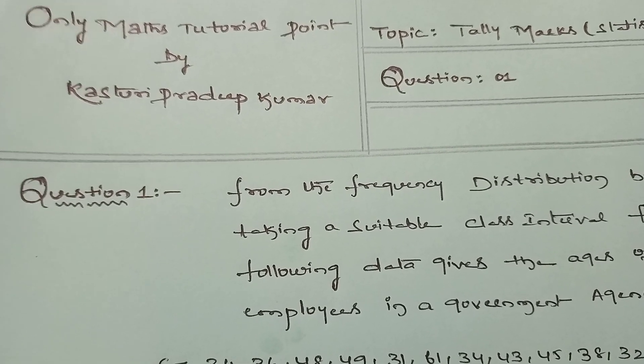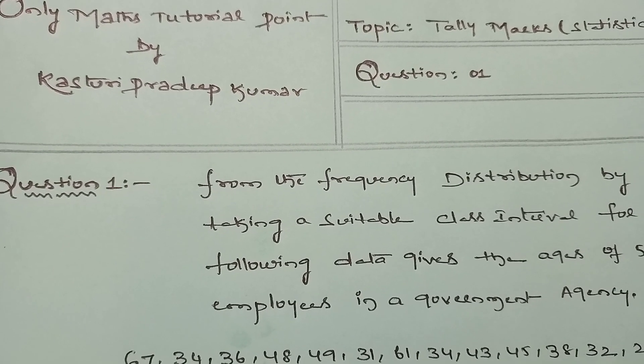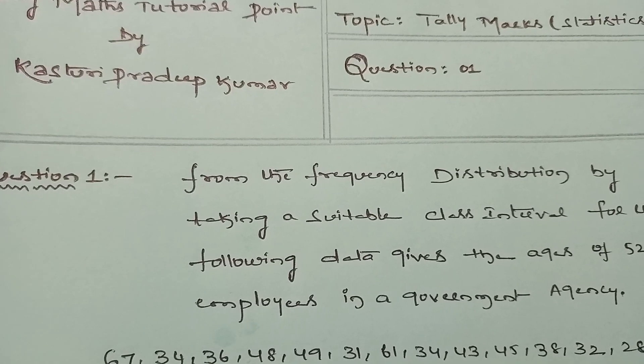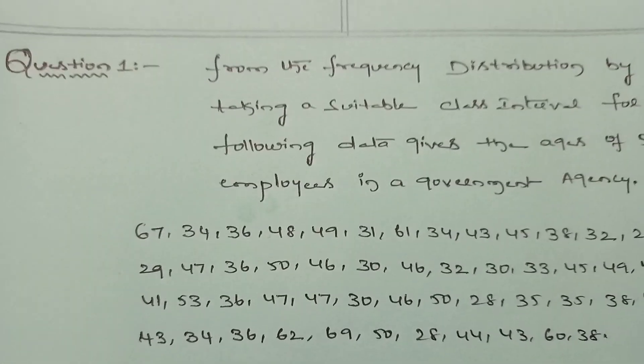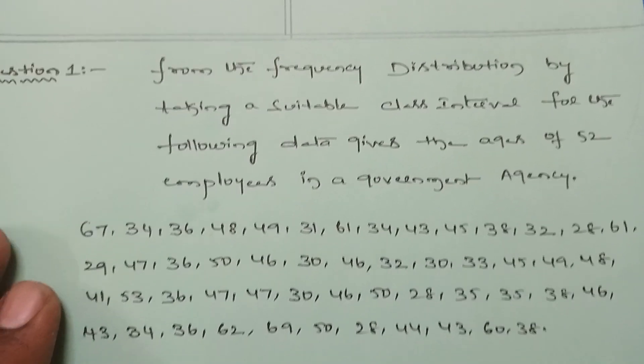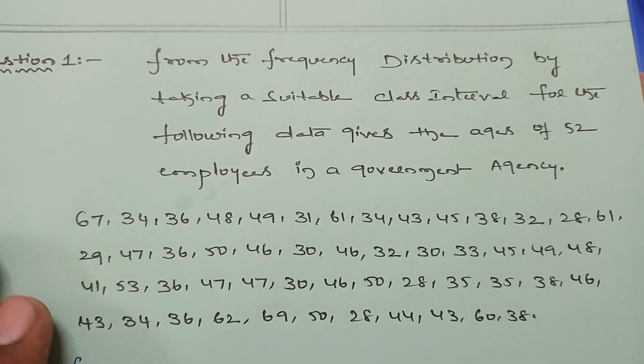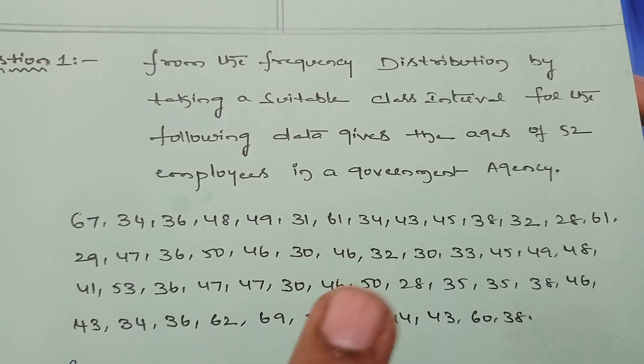Hi guys, welcome to Only My Suitable Point. Today we are going to discuss the topic called tally marks in statistics. Question number one: Find the frequency distribution by taking a suitable class interval for the following data that gives the ages of 52 employees in a government agency.